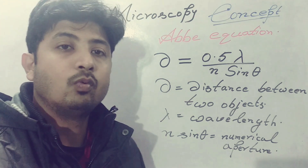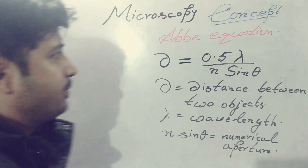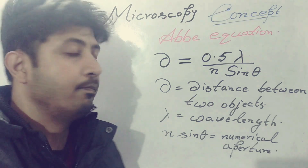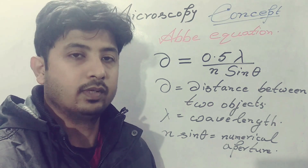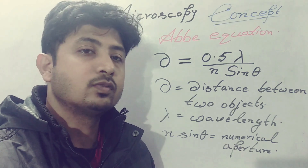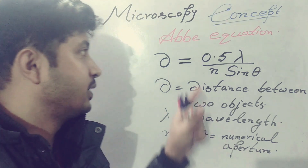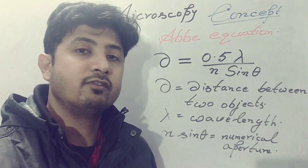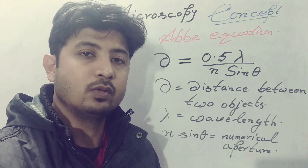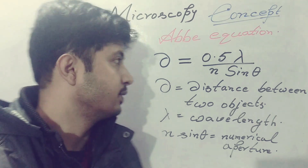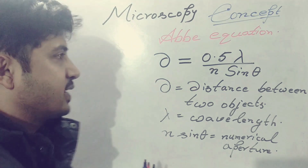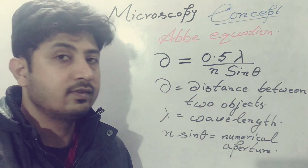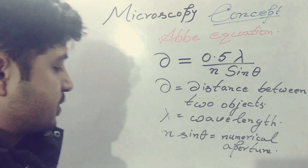To enhance the resolution of the microscope, lambda — the wavelength — has to be much shorter. When the base value of n sine theta is much higher, you will automatically get a much lower d value, which signifies better resolution. Lambda is easy to understand, so now we'll go for n sine theta, which is very crucial for microscopy.